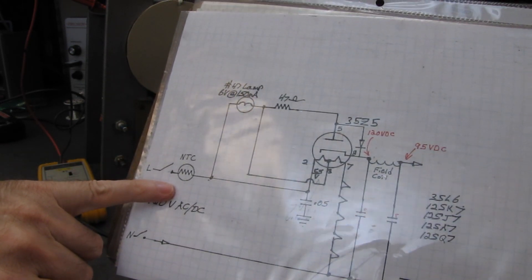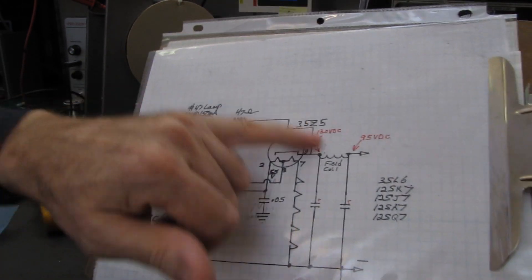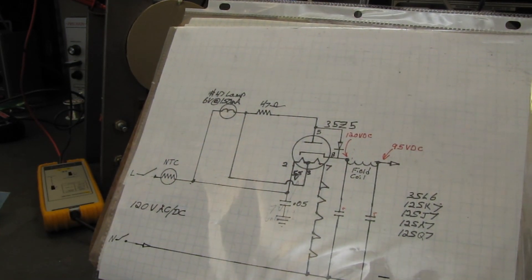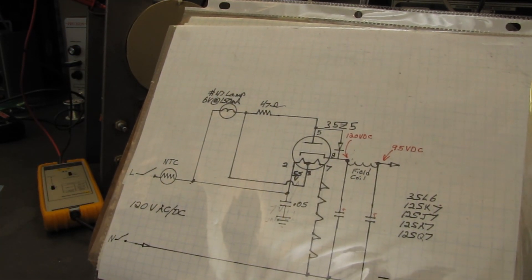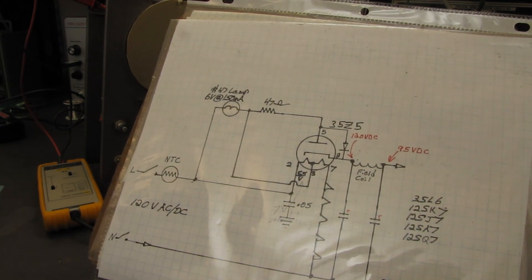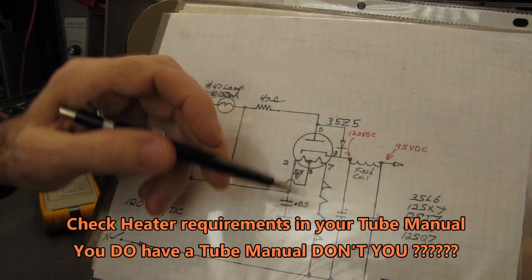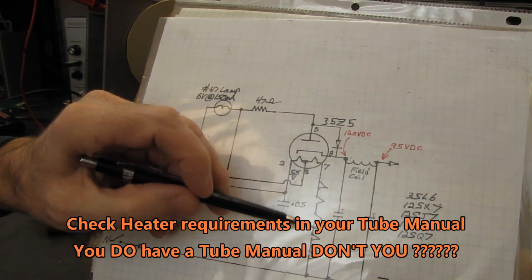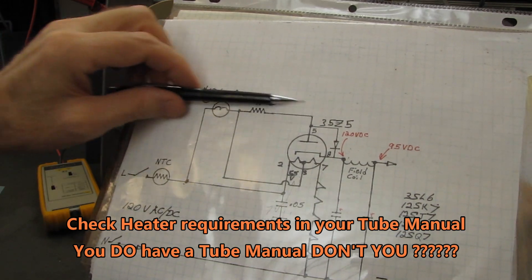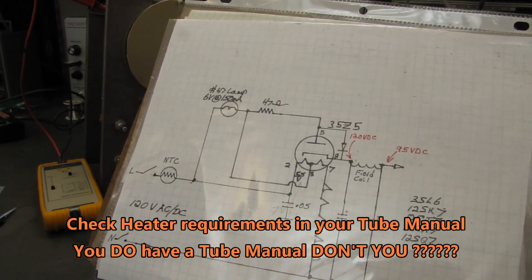So in this case, we have the NTC here and the entire radio string. If you're using a set that has a 250 milliampere filament string or heater string, you could always just insert it directly into the filament string and get your full 120 volts to your anode.